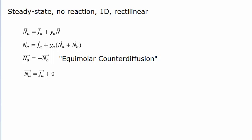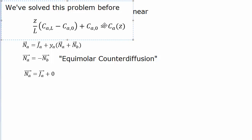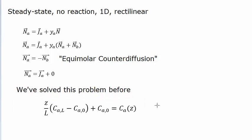What that means is that this is going to be the exact same solution as we had with the thin film in the first lecture, because we used all those same assumptions and got to the same result. The derivation from that point on is exactly identical. So what we get is this linear concentration profile that starts at C_A0 and decreases — essentially the y = mx + b form.